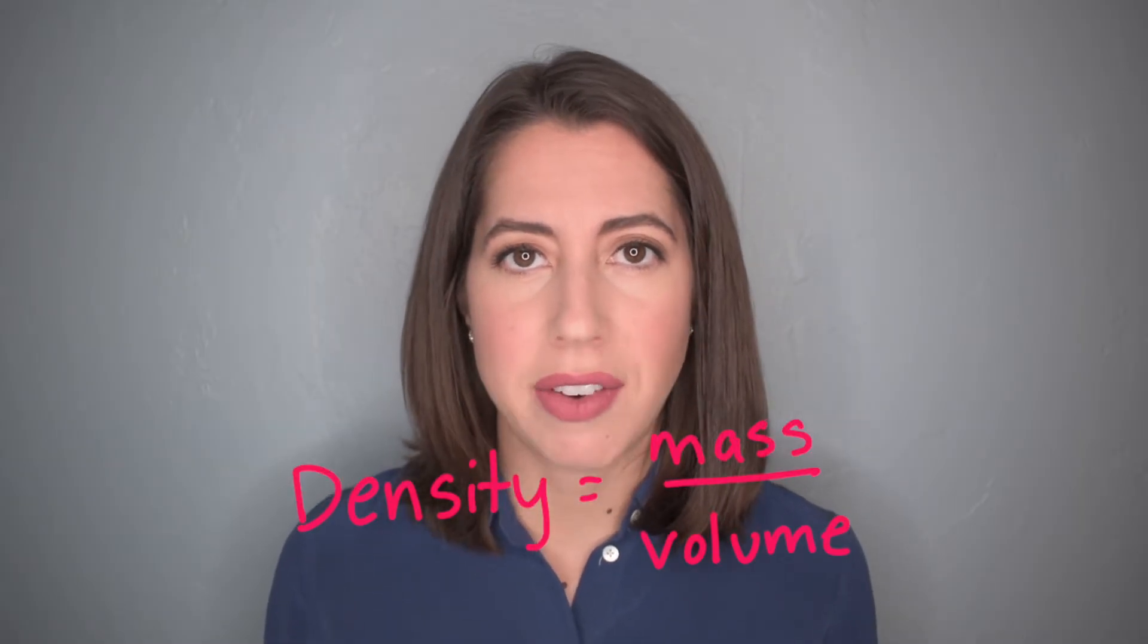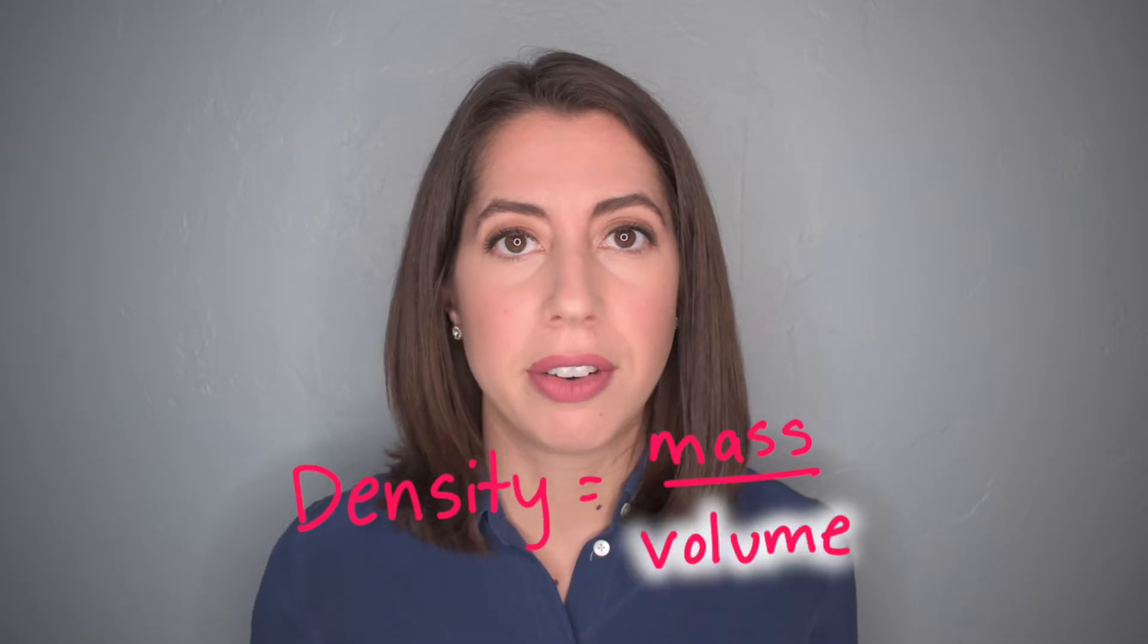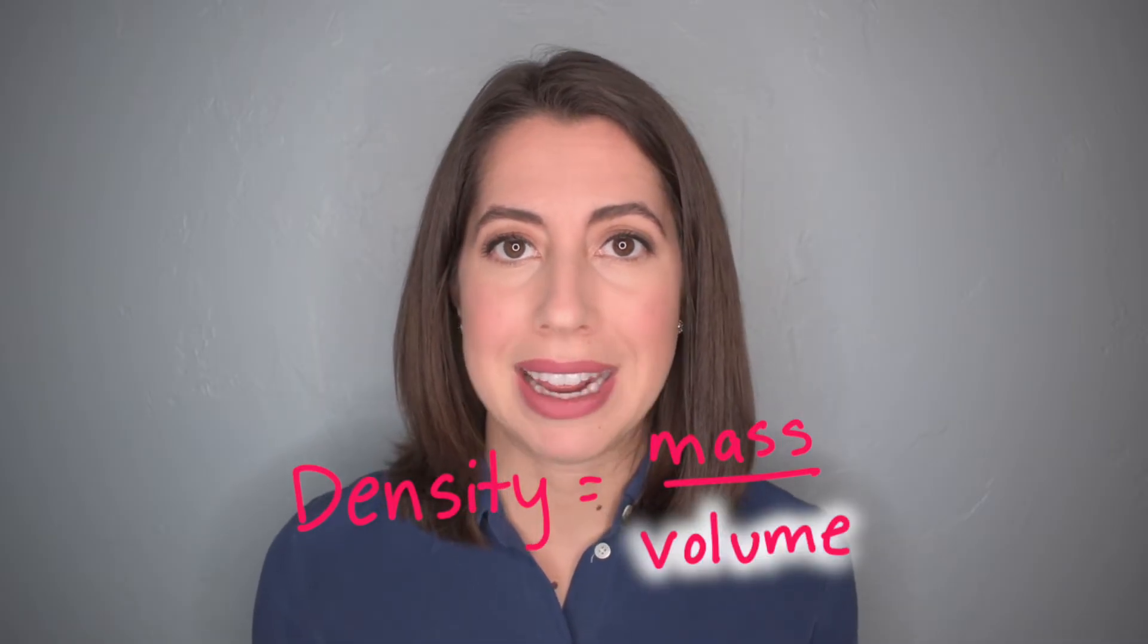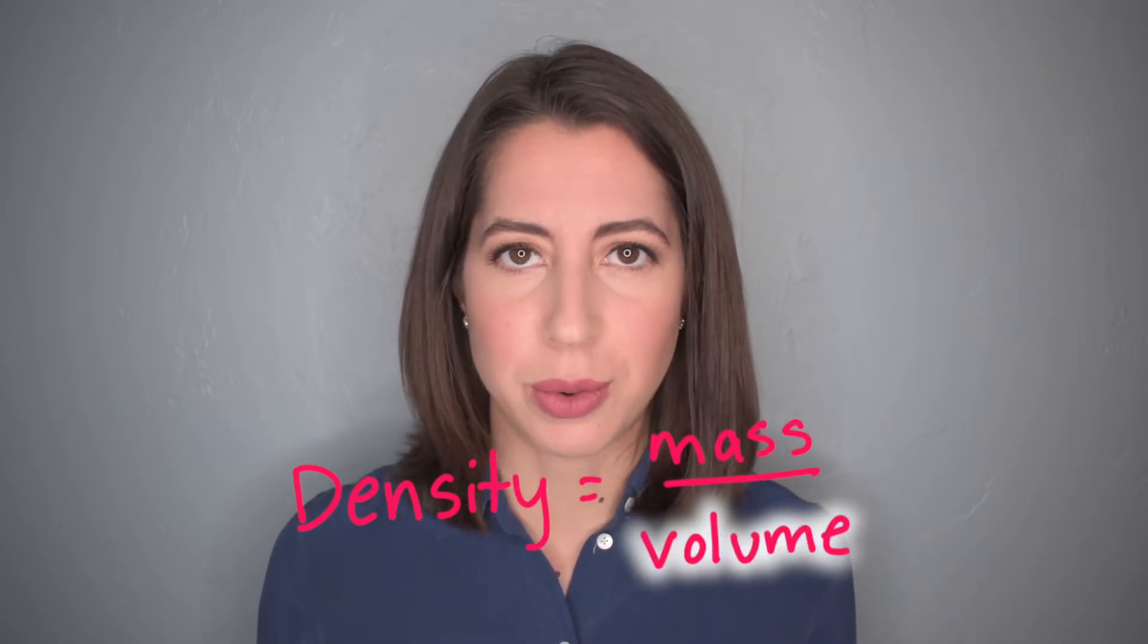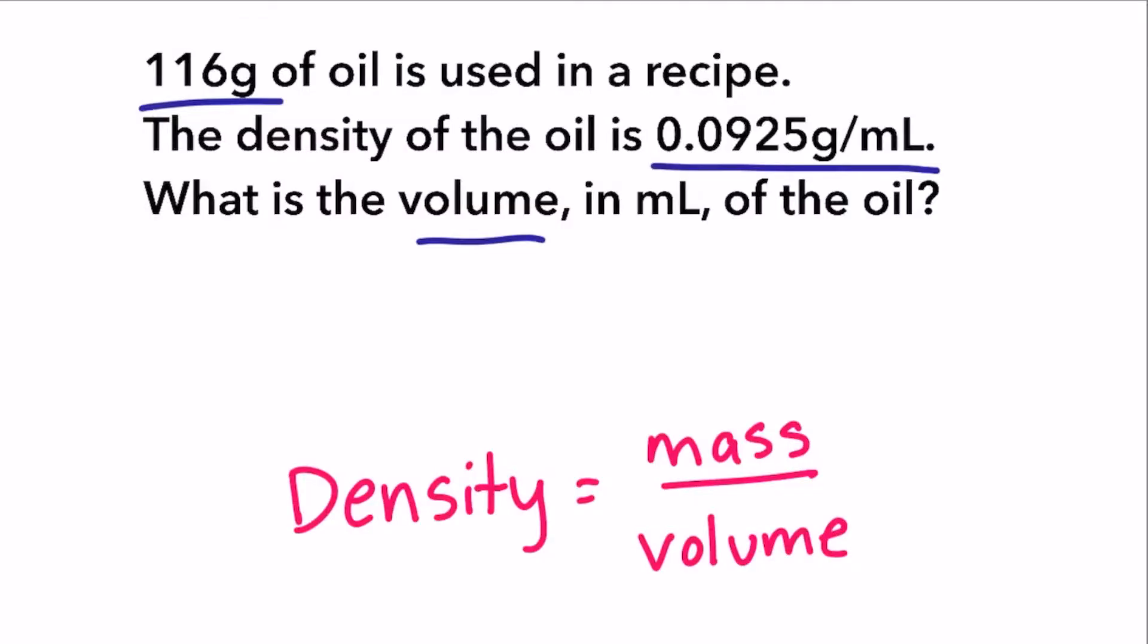The formula for density is density equals mass divided by volume. So in order to solve for volume, we have to get volume by itself on one side of the equal sign. Here's how we do that. We're going to use inverse operations to get volume by itself. Mass is being divided by volume. The opposite of division is multiplication. So to undo that, we multiply mass by volume.